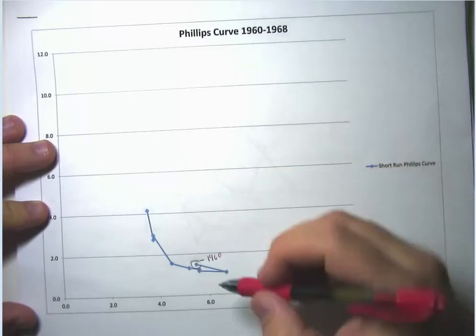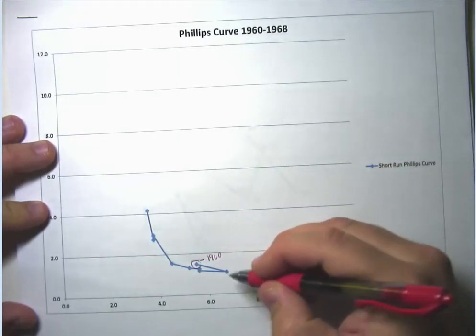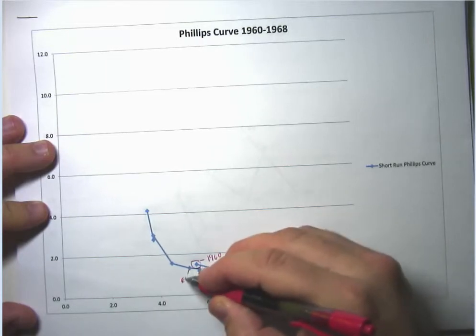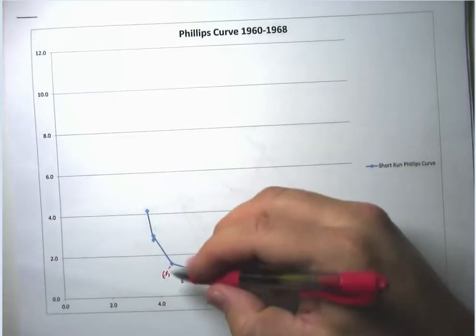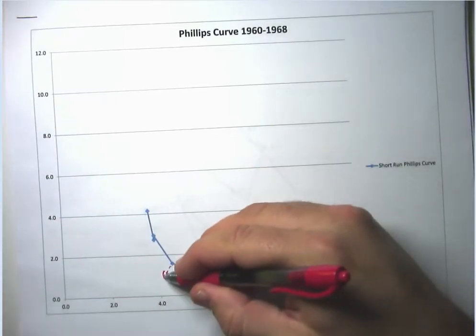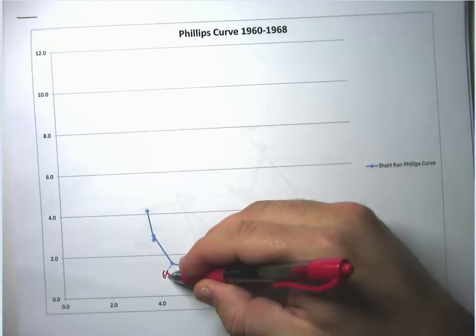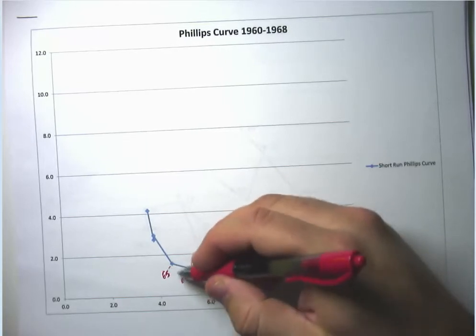Then as the economy starts to recover and the unemployment rate drops, inflation slowly starts to heat up. So 61, 62, 63, 64, 65. And one of the things that's happening during this period is of course that the Vietnam War is getting underway and the government is spending a lot of money on that.